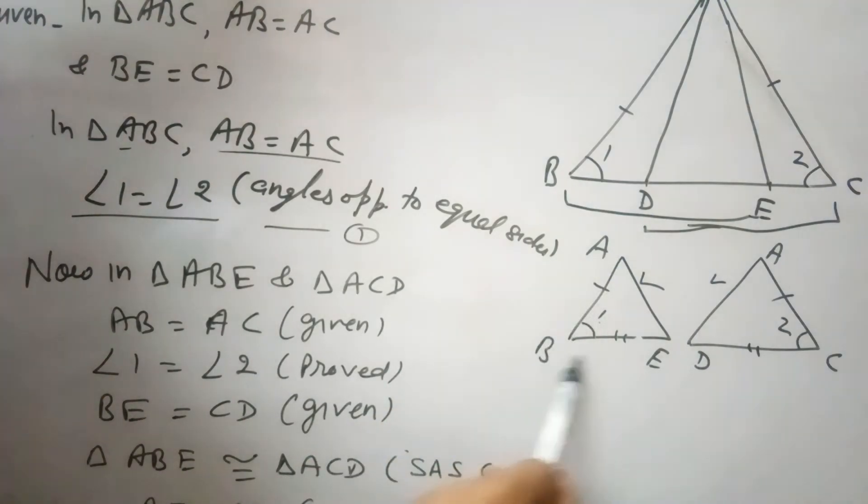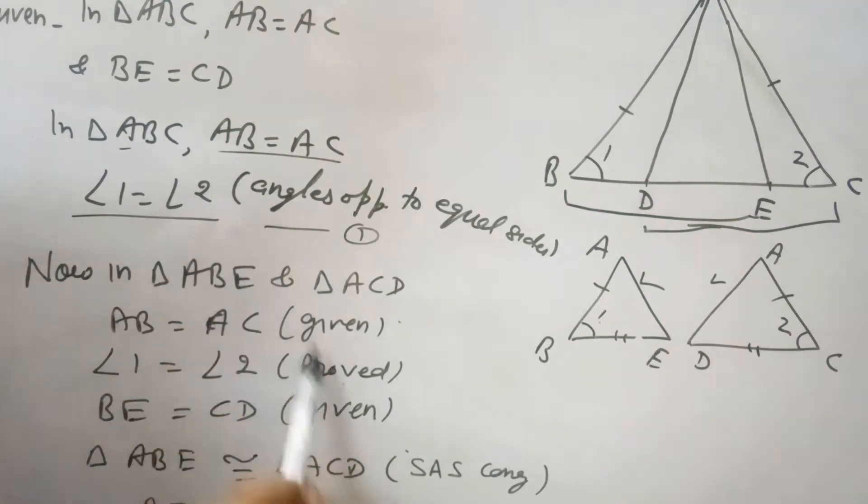Now in triangle ABE and triangle ACD, AB equals AC, this is given. Angle 1 equals angle 2, this we have proved in equation 1. And BE equals CD, this is also given. So it means these both triangles are congruent by side angle side congruency.